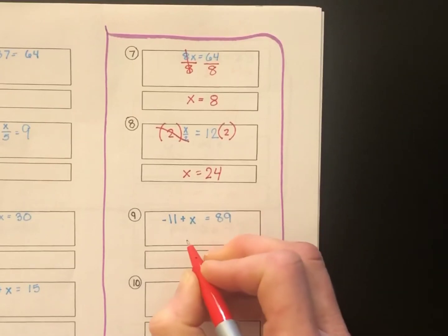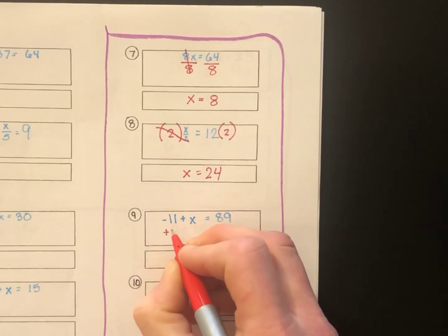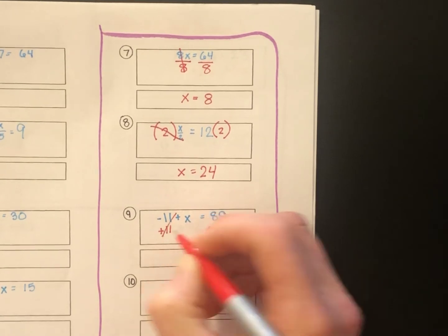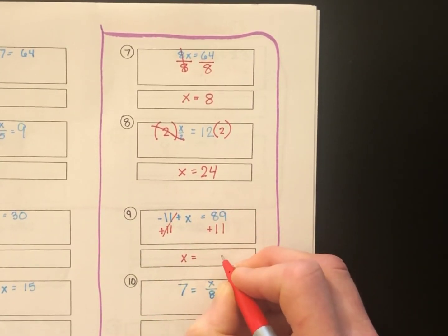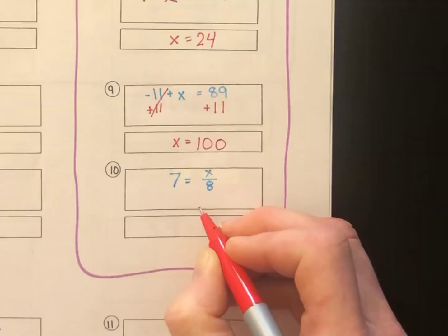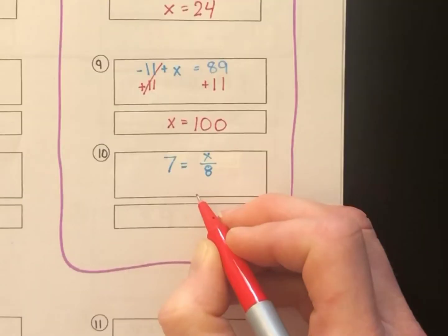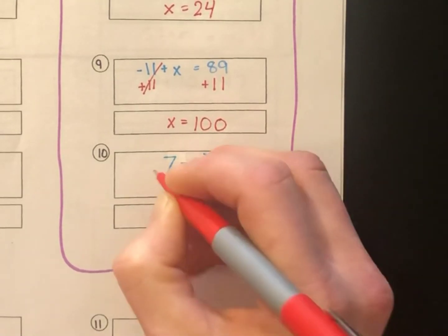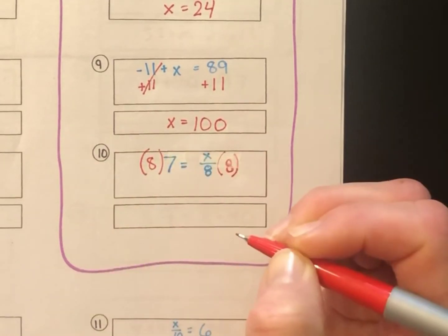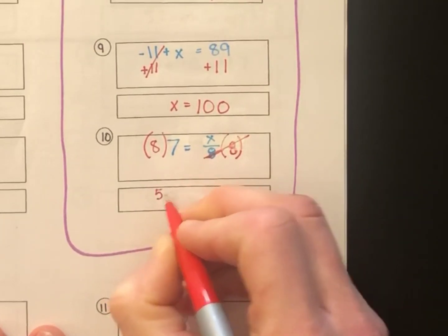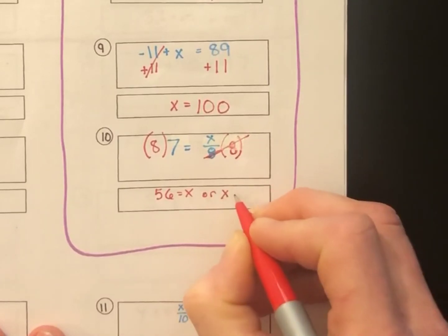Number 9, negative 11 plus x equals 89. To get the x by itself, I'll add 11 to both sides. Cancels out. We have x equals 100. 89 plus 11 is 100. Now, on to number 10. 7 equals x divided by 8. To get the x by itself, the opposite of divide by 8 is times 8. So, I'll multiply both sides by 8. That cancels out, so we're left with x. 8 times 7 is 56 equals x. Or, x equals 56.